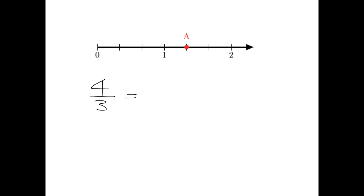Now you should remember from last year that's an improper fraction, and we can always turn an improper fraction into a mixed number. We say three divides into four — it goes one time with one remaining. So we've got one and one-third. And we can see how that makes sense on the number line: there's the one and there's the one-third. So four-thirds is the same as one and one-third.